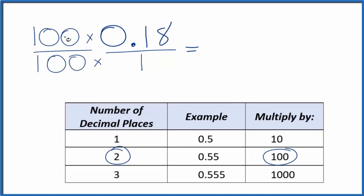Essentially, 100 divided by 100 is just 1. We're multiplying by 1, so we haven't changed the value — just the way it's represented. 100 times 0.18 is 18, and 100 times 1 is 100.